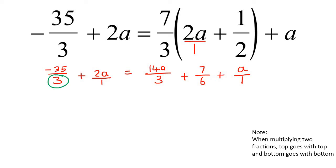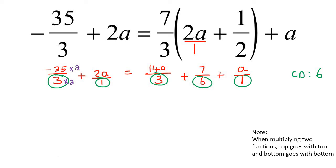We look at the denominators, and we would like those denominators to be the same — a common denominator. You could use 12 or 18, but the number 6 will also work, so the lowest common denominator can be 6. That means we're going to multiply this one by 2, and then multiply the top by 2 as well, because what you do at the bottom you must do at the top.